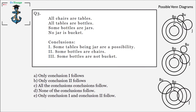The first conclusion says 'some tables being jars is a possibility,' and this is true because when looking at possibility cases we just need to find one particular case where the condition holds. Across the three Venn diagrams I made, this condition appears to follow in all three.